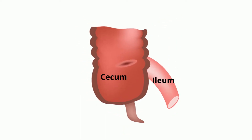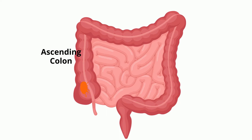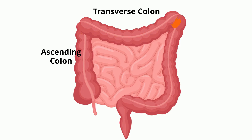From the cecum, digested food travels upward into the ascending colon. It then travels to a horizontal section called the transverse colon, and then descends into the descending colon.